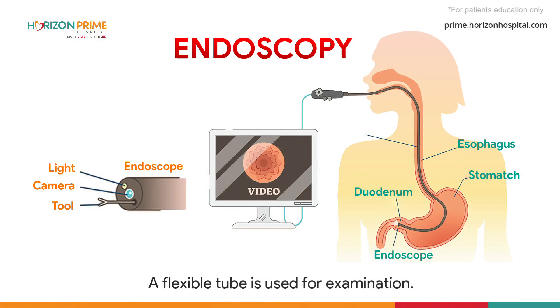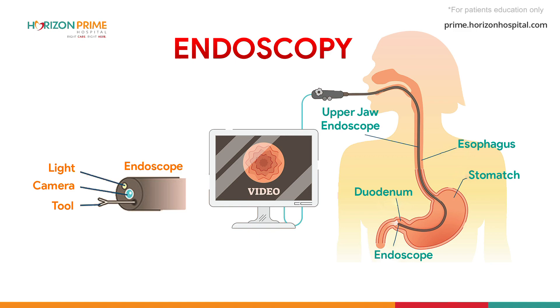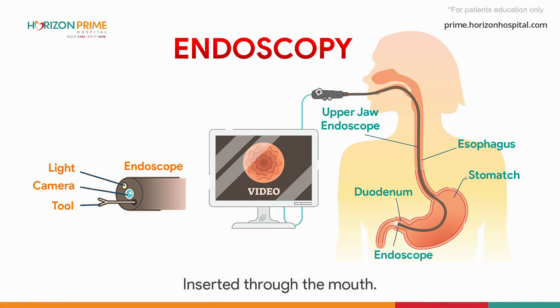The examination is done with a flexible tube called an upper GI endoscope, which has an attached camera, and it is inserted through the mouth.